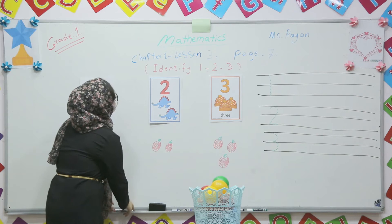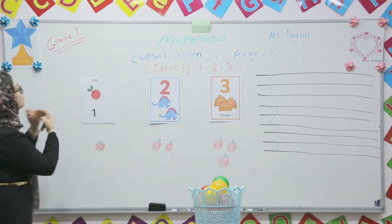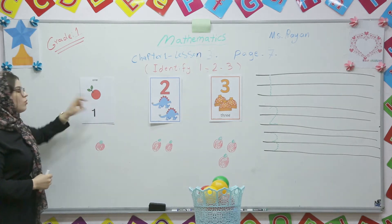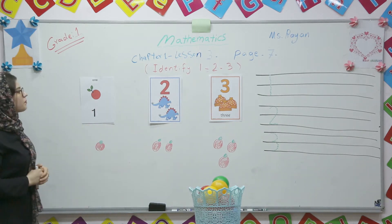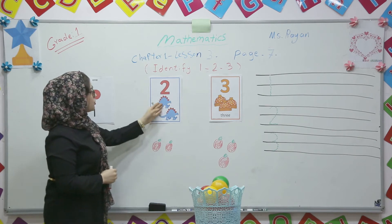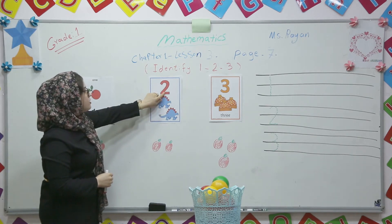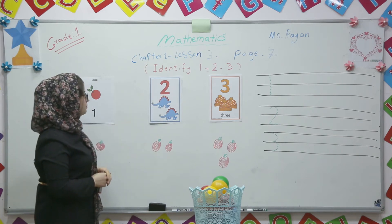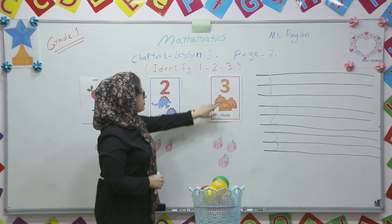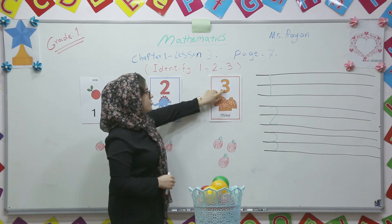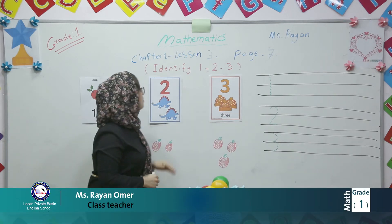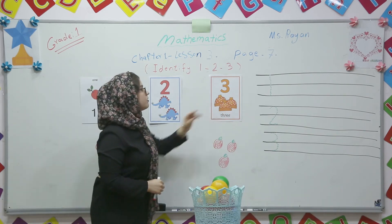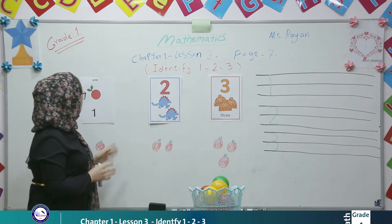So here we have got a picture — 1 apple. You see? Only 1 apple. Again, we have got 2: 1, 2. You see? This is number 2. And 3: 1, 2, 3. You see? Number 3. So these are the numbers.